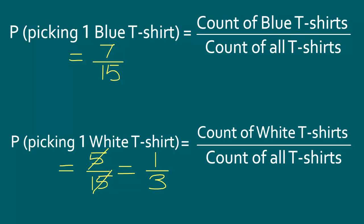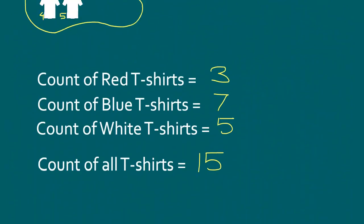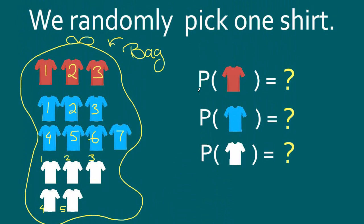I want to highlight one quick point before we conclude. Even though we have three different colors — red, blue, and white — when we are randomly picking one t-shirt, the probability of picking a red is not one-third, blue is not one-third, and white is not one-third, because they are not equally likely. Because there are more blue t-shirts, it is more likely to pick a blue t-shirt, so that probability is the highest at 7 over 15. And the probability of picking a red t-shirt is the lowest, at 3 over 15, because it has the fewest number of t-shirts.